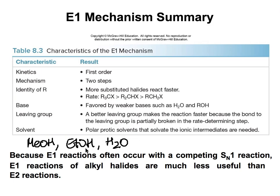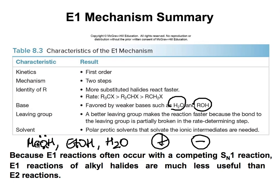Often you will see an E1 reaction written showing only methanol, because methanol acts as both the solvent and the base. Polar protic solvents stabilize both the carbocation and the carbanion — the protons stabilize the negative charge, and the lone pairs on the oxygen stabilize the positive charge. So methanol and water serve as both the solvent and the base in E1 reactions.